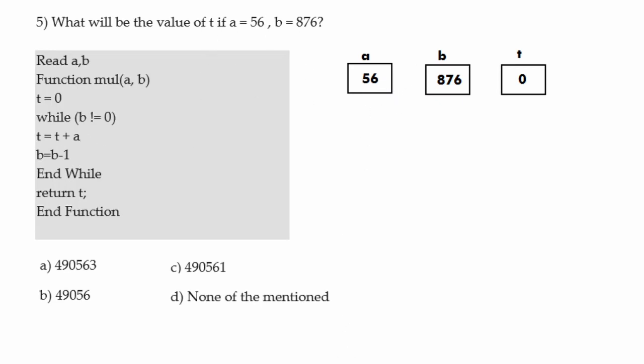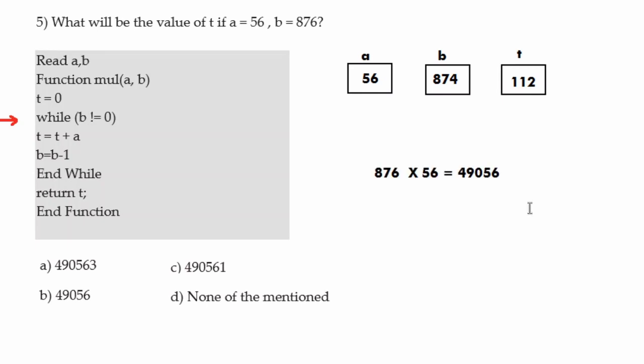T equals T plus A, so T becomes 56. Then B is decremented by 1, becoming 875. We check B not equals 0 — true — so T becomes 112, and B becomes 874. This process continues until B becomes 0. After 876 iterations B will be 0, and in each iteration A (which is 56) is added to T. So we can simply say 876 times 56, which equals 49056. That is our answer.